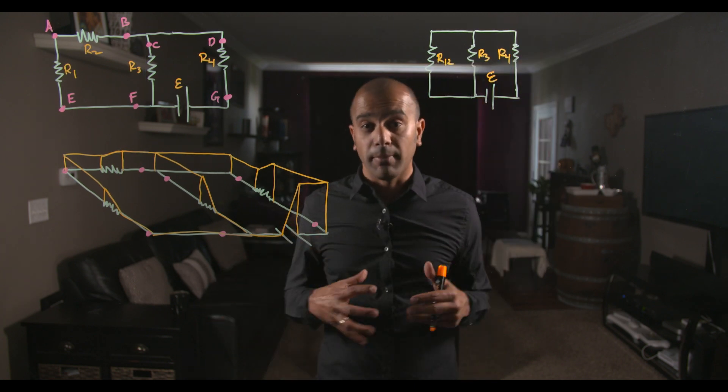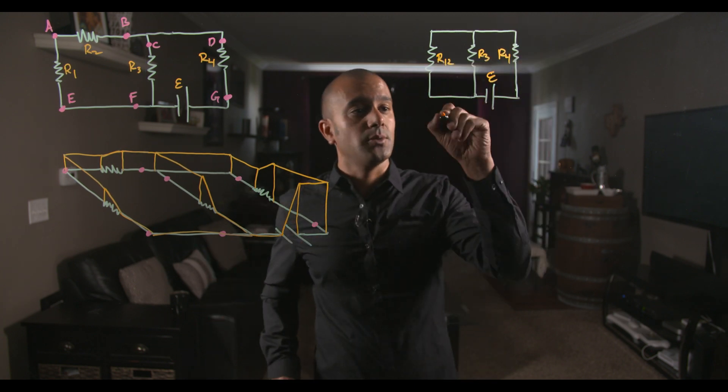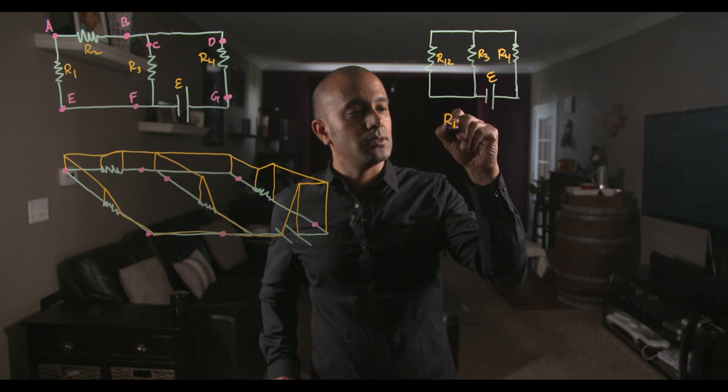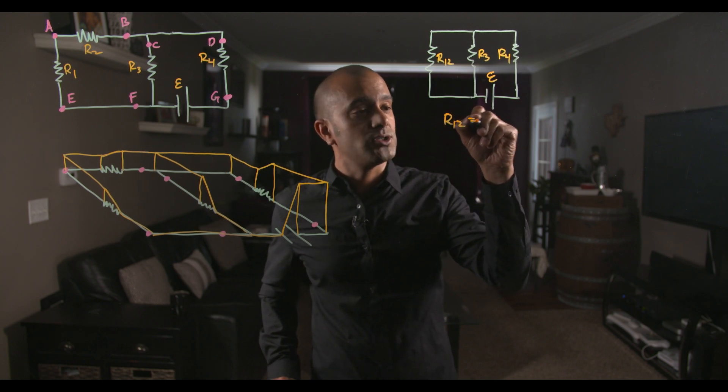Series resistors are easy when you combine them. You just add up the resistances. So in this case, R1 plus R2 is R12, which is 6 ohms.